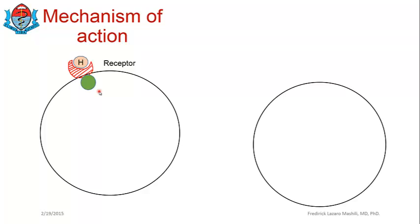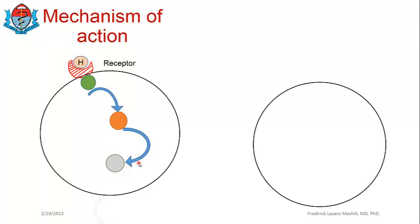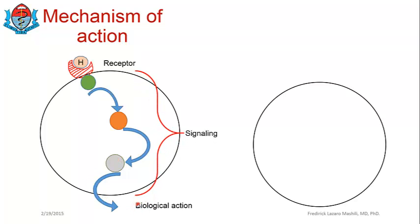The hormone-receptor complex will activate an intracellular molecule, and this activated intracellular molecule will activate another, and that one will activate yet another — you have this kind of cascade. At the end of the day you will have the biological action. This series of reactions whereby one molecule is activated and activates another until you have a biological action is what is known as signaling.